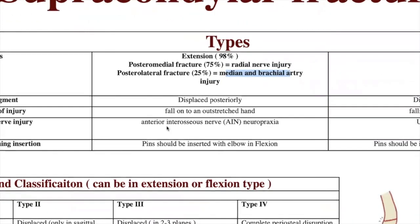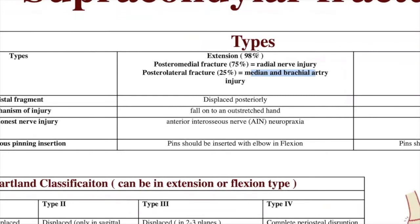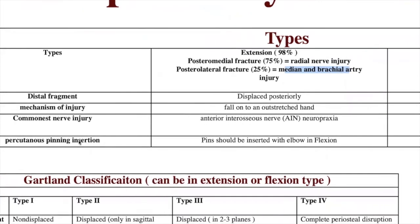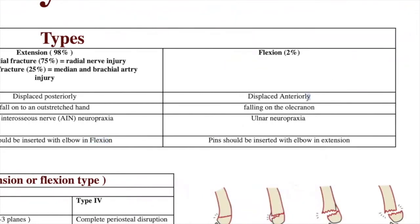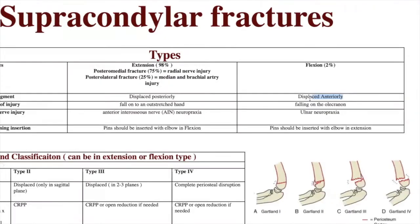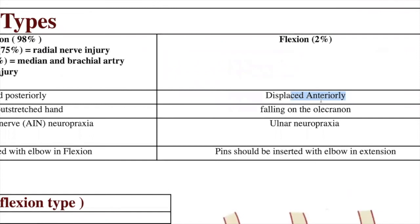The most common nerve injury in the extension type is the anterior interosseous nerve. Percutaneous pinning should be inserted while the elbow is flexed in the extension type. The less common flexion type occurs from falling on the olecranon; the distal fragment is displaced anteriorly, and the most common nerve injury is the ulnar nerve. Pins should be inserted when the elbow is extended in the flexion type.